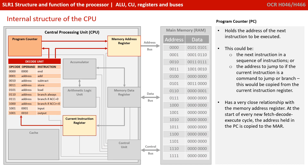The next component is called the program counter, and this is the first of a number of registers you need to be aware of. It holds the address of the next instruction in memory which needs to be executed by the processor. This could simply be the next instruction in a sequence, or it could be an address to jump to a very different instruction — for example, if the current instruction register contains a command to jump or branch. It has a very close relationship with the memory address register, and at the start of every single new fetch-decode-execute cycle, the address held in the program counter is copied into the memory address register.